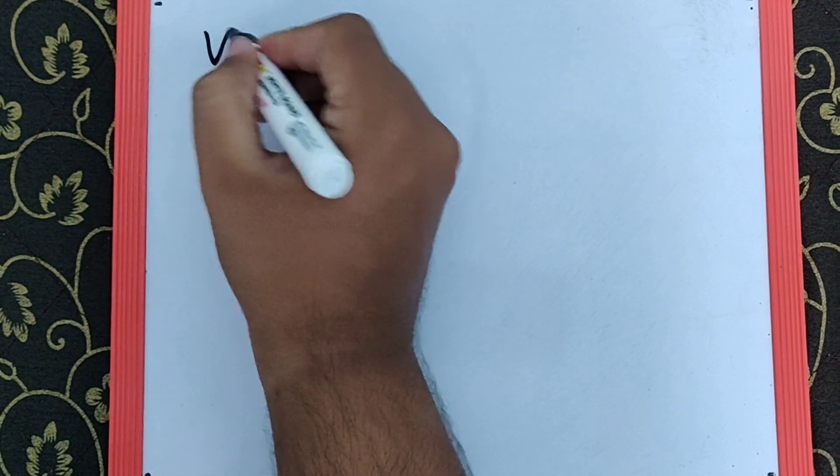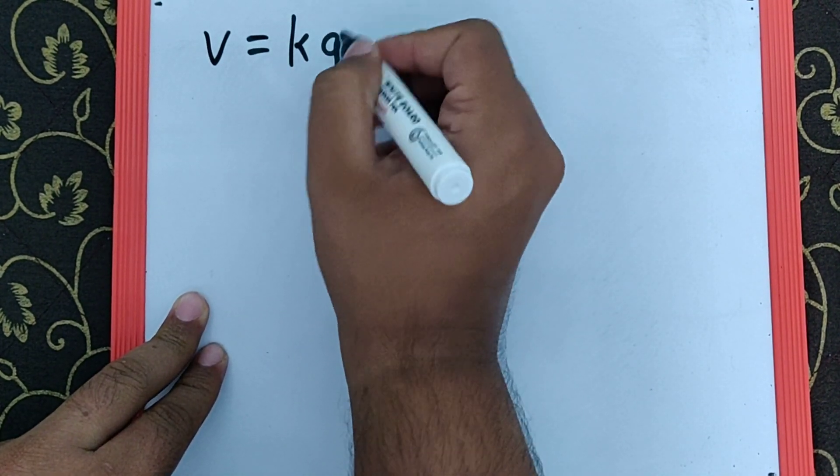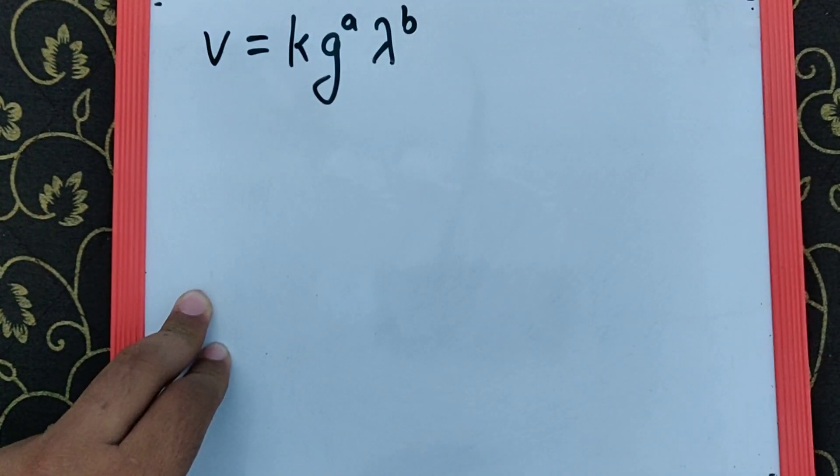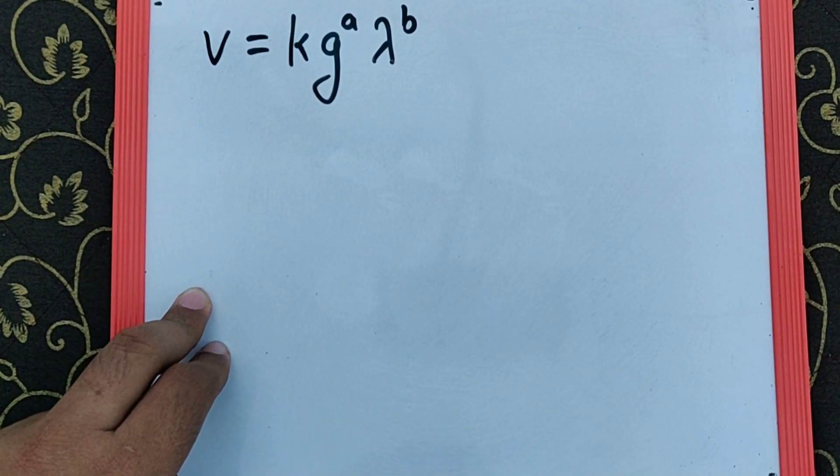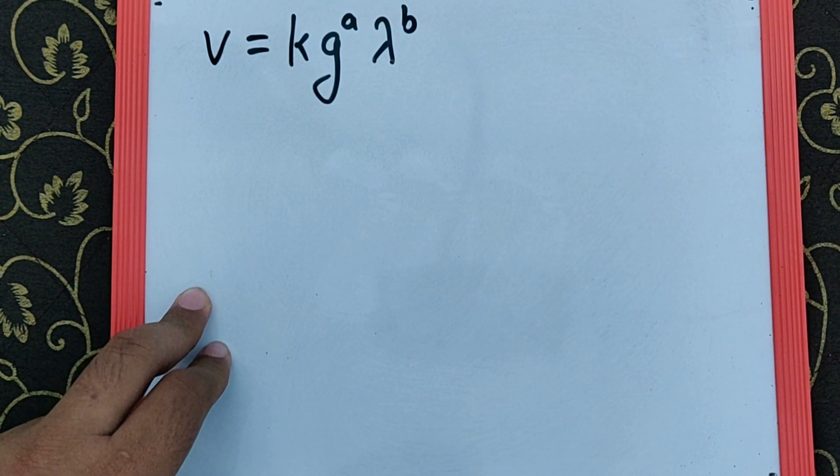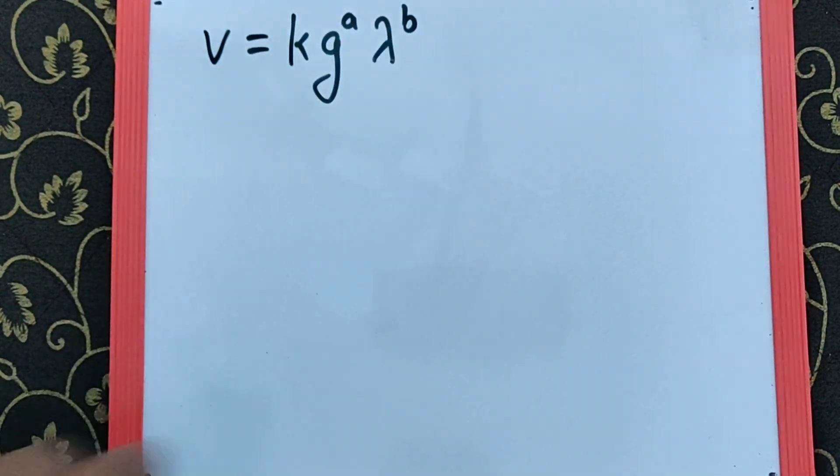The next question says the velocity of waves on water is given by V equals K G raised to A lambda raised to B, where G is the acceleration due to gravity, lambda is wavelength, and K is a constant. The values of A and B respectively need to be found.